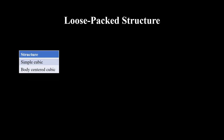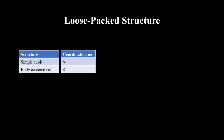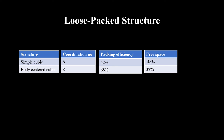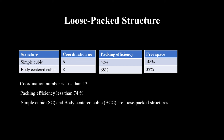To conclude today's topic, we looked at two structures — simple cubic and body-centered cubic. Their coordination numbers are 6 and 8 respectively. Their packing efficiencies are 52% (free space 48%) and 68% (free space 32%) respectively. Both structures have coordination numbers less than 12 and packing efficiency less than 74%, which is why they are classified as loose-packed structures.